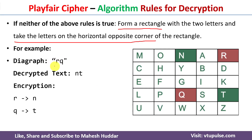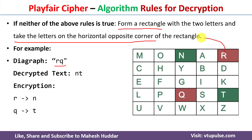For example, digraph RQ: R is present here and Q is present here, not in the same row or column. We form a rectangle and take the opposite corner letter in the anti-clockwise direction. So R is decrypted as N and Q is decrypted as T, giving NT as the decrypted text.